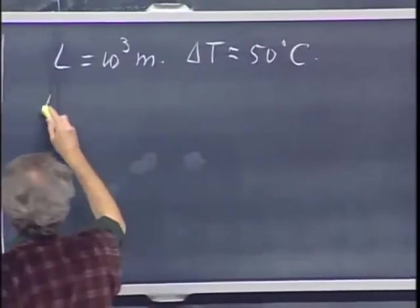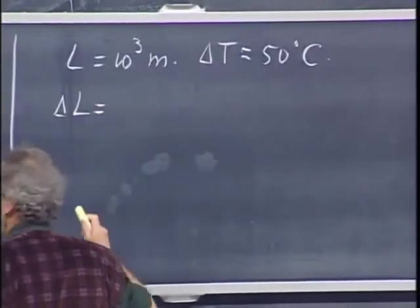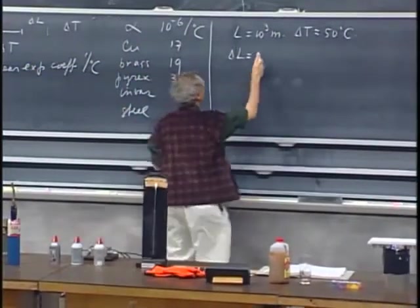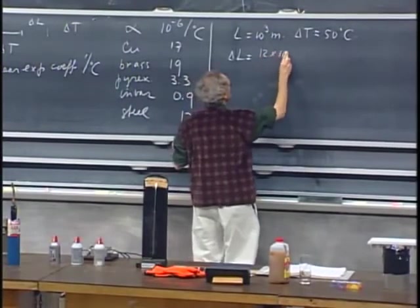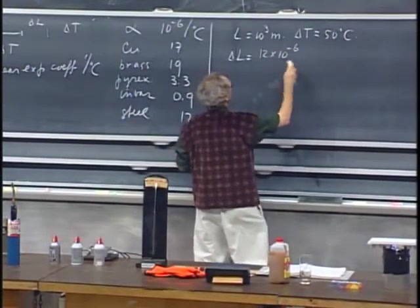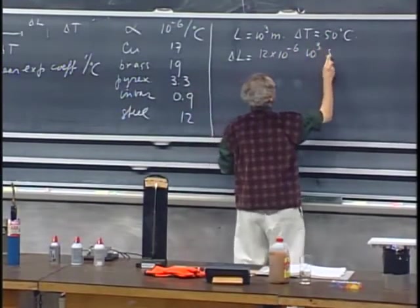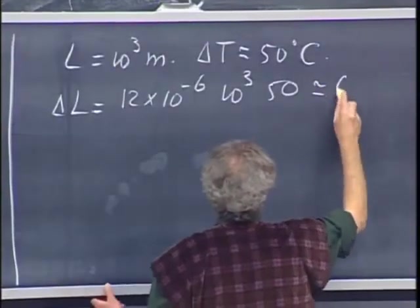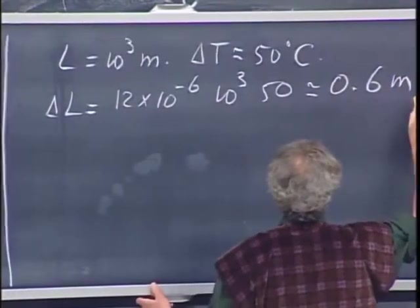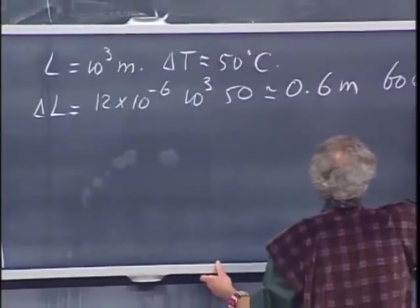So what is delta L? Well, that would be 12 times 10 to the minus 6, times 10 to the third, times 50, and that is about 0.6 meters, which is about 60 centimeters.